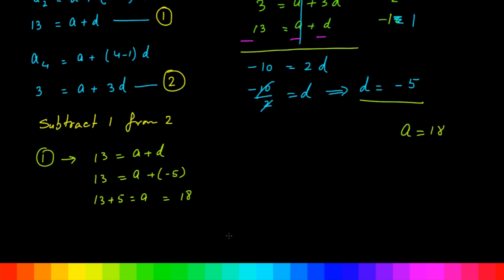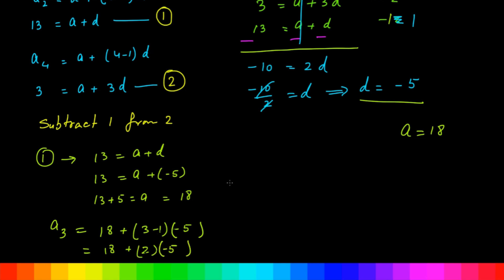A is equal to 18, the first term. Now A3 = 18 + (3 - 1) × (-5) = 18 + 2 × (-5) = 18 + (-10) = 8. So A3 is 8.